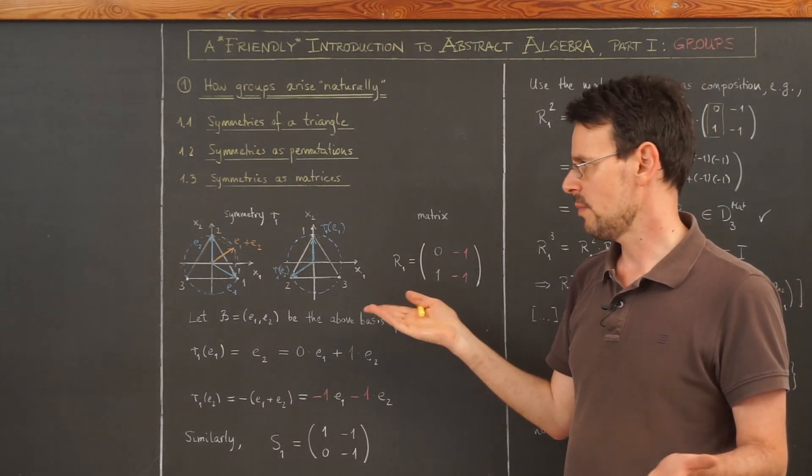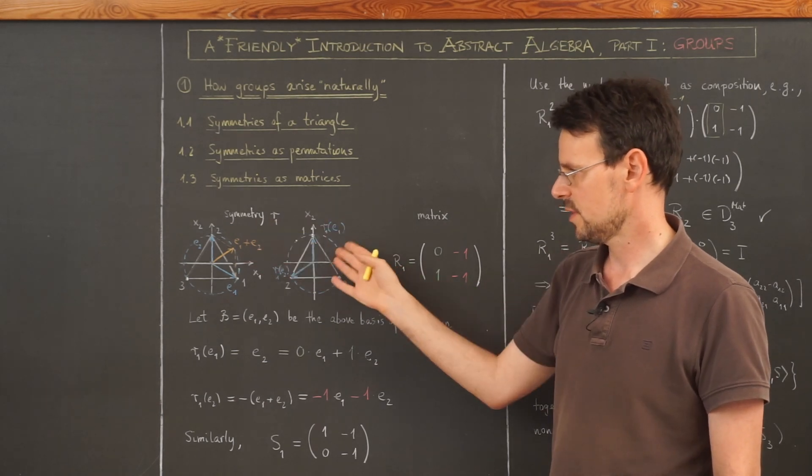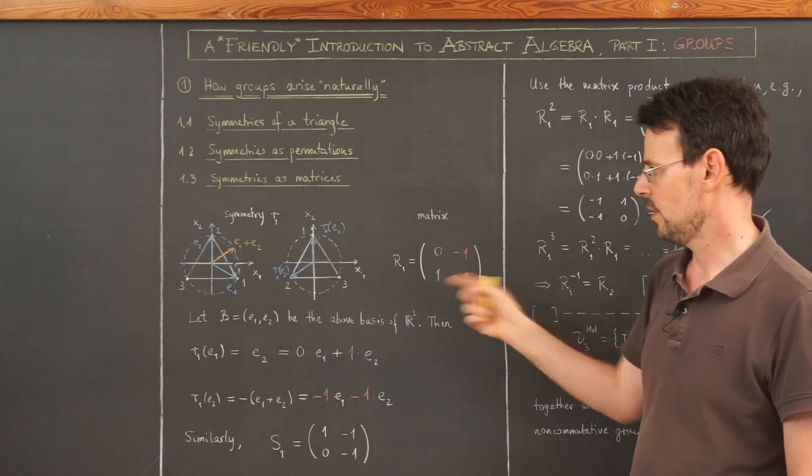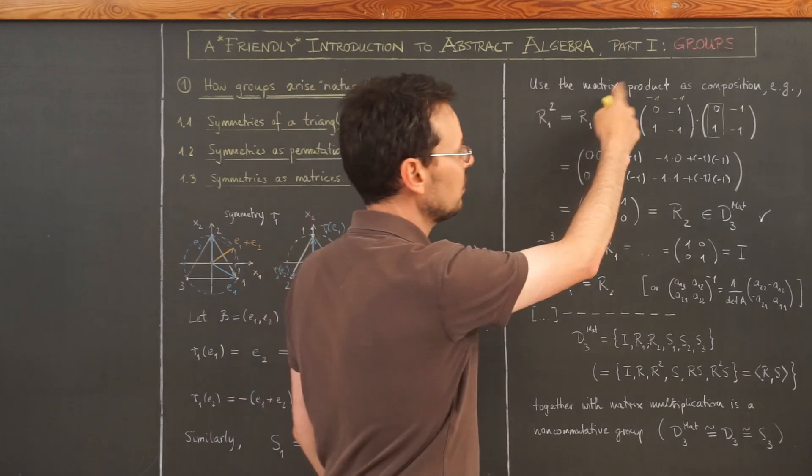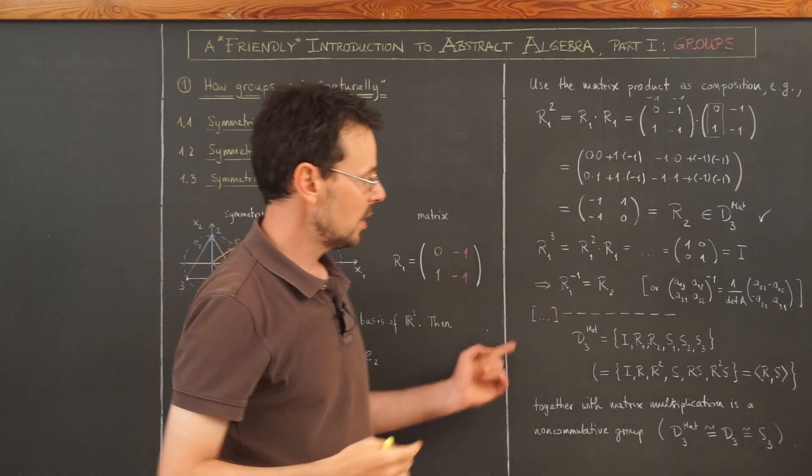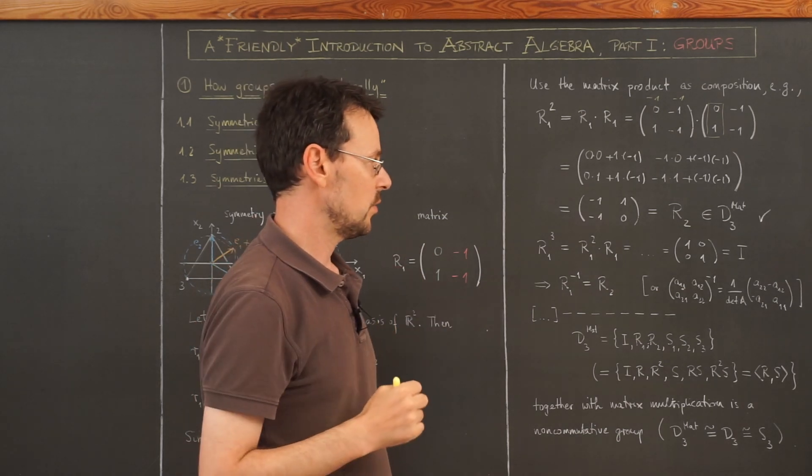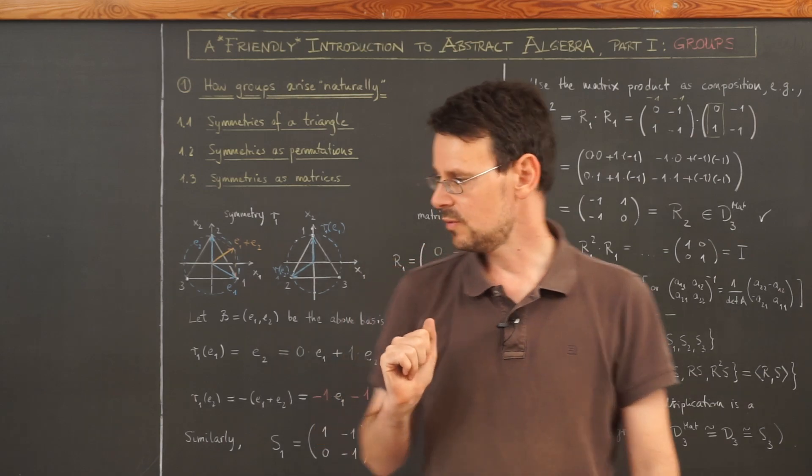And I will tell you or remind you how to associate to a linear transformation of such a vector space a matrix, how we end up with the columns. And then we will see that using matrix product as a composition, this set of six matrices in this case actually turns out to be a group. Let's dive into the details.